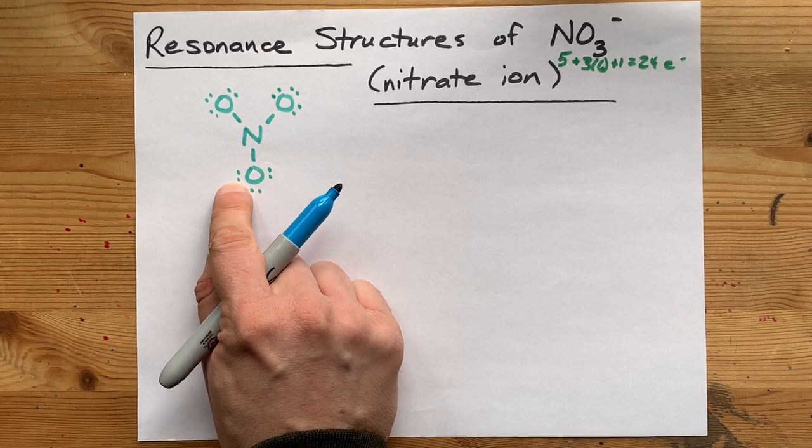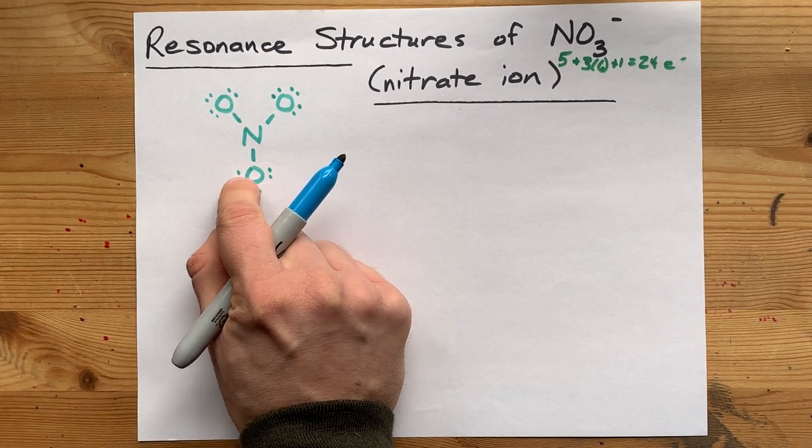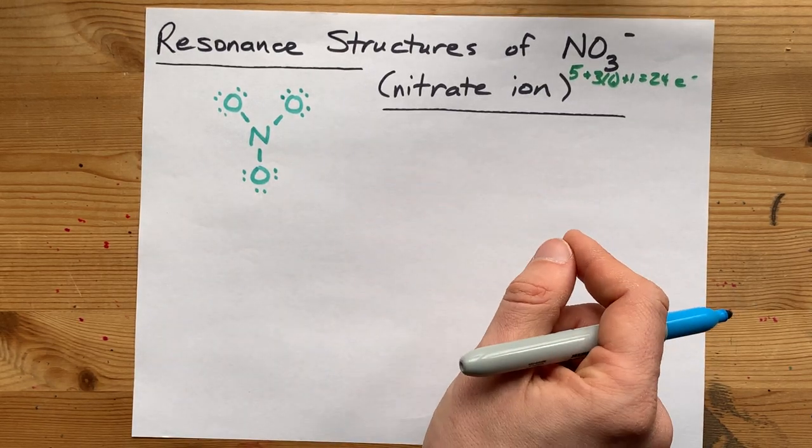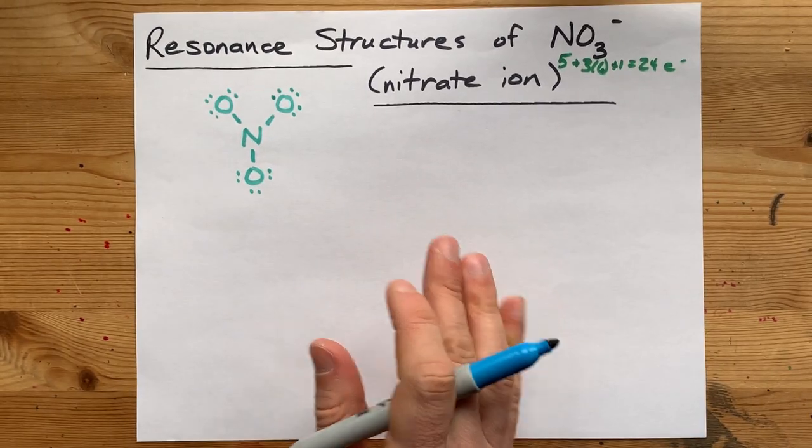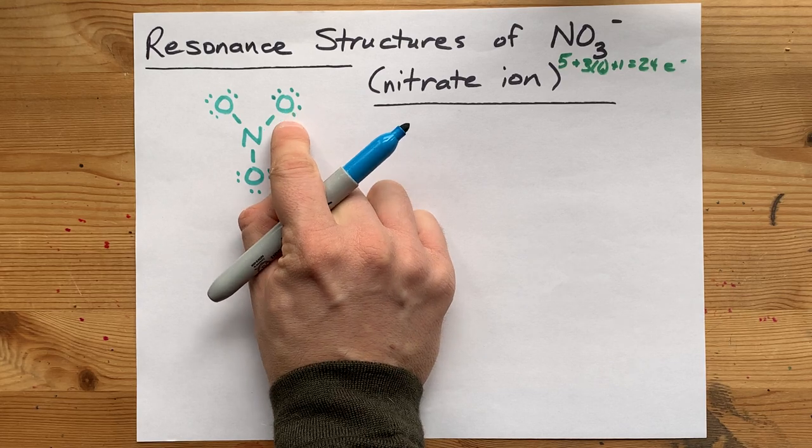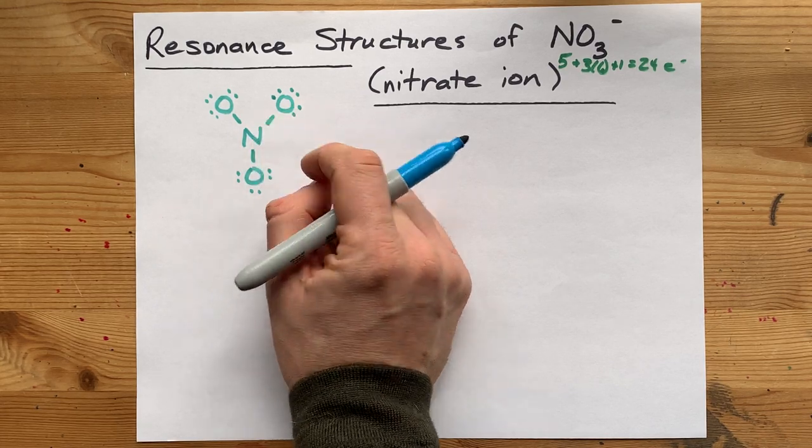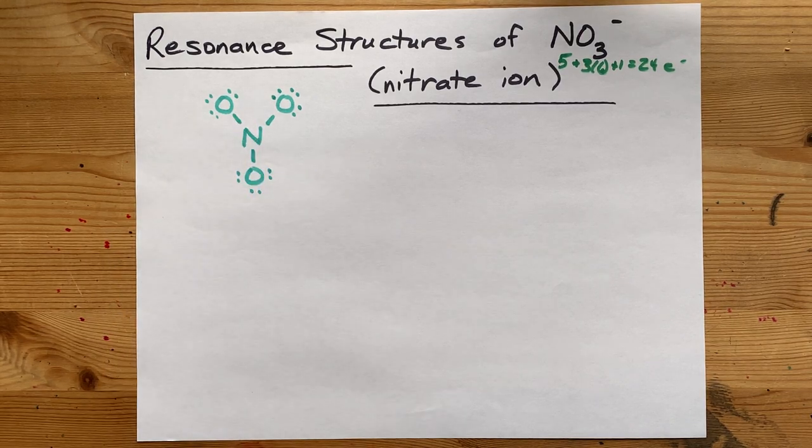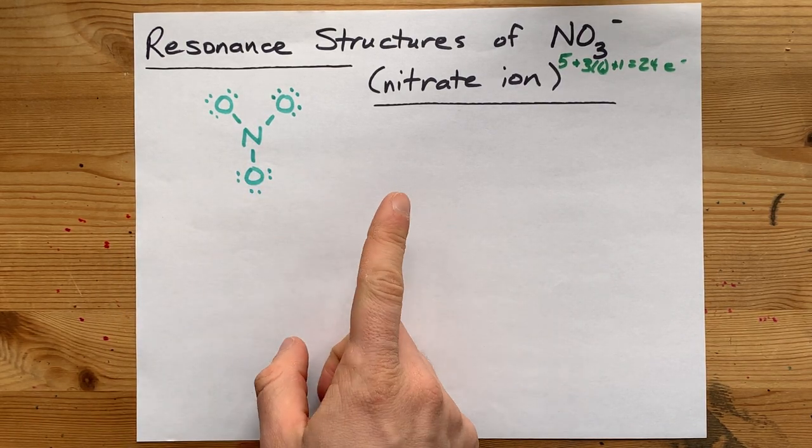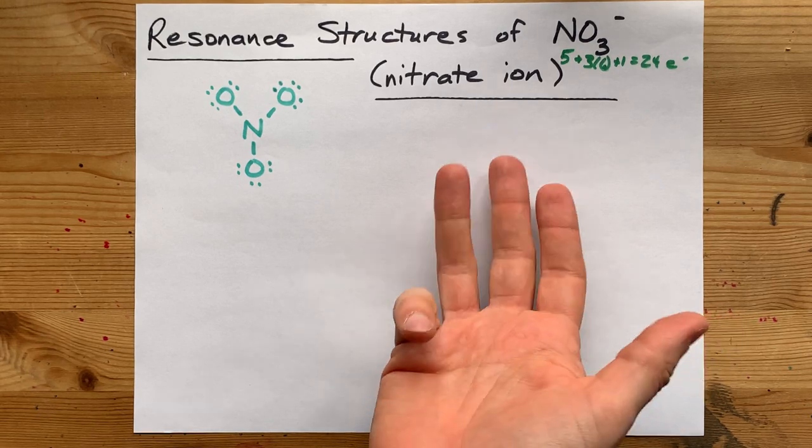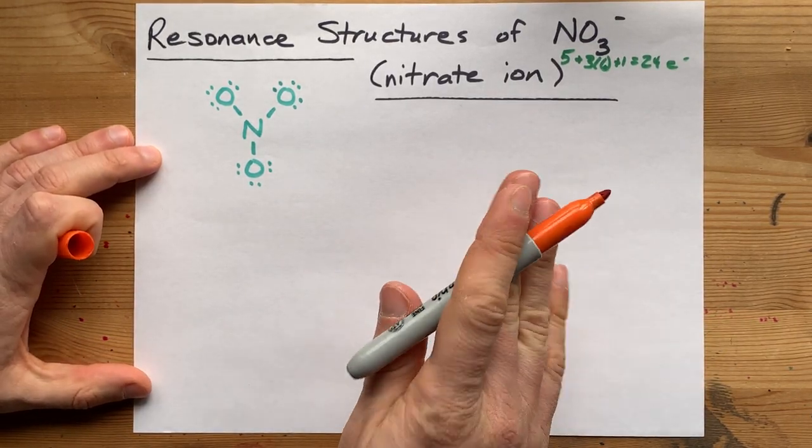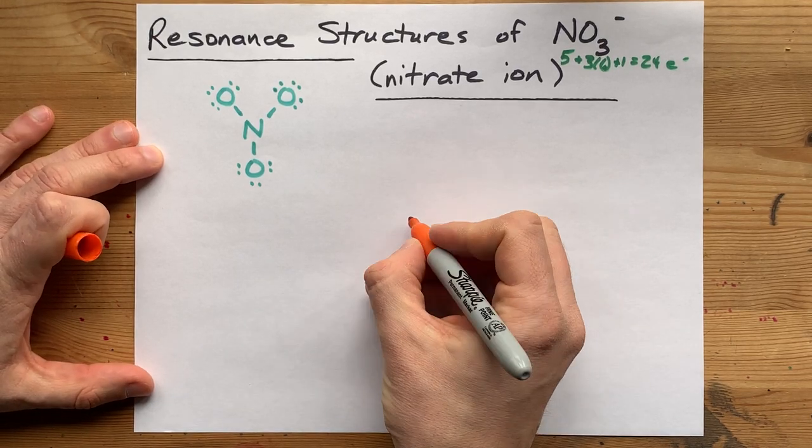So the question I have for you is, do you want to move this electron pair from oxygen to make a double bond with nitrogen? That would complete the octet on nitrogen, which would be good. Or do you want to move in this electron pair from oxygen or an electron pair from this oxygen? The answer should be it doesn't matter which one you pick, but it could have been any of them. And this is only officially for the Lewis structures, so bear with me.